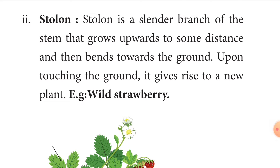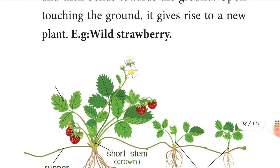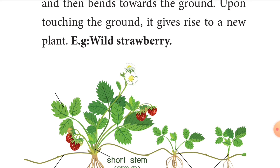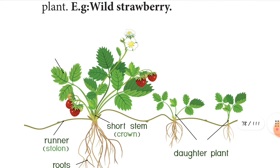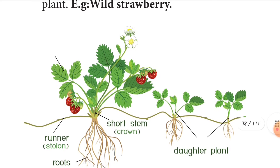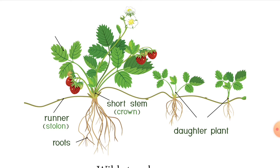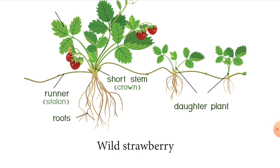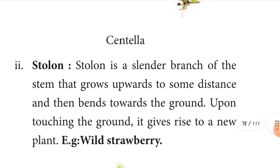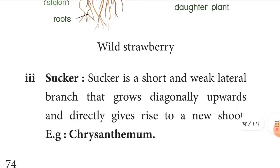Next is the stolon. This type of stem is a branch of the stem that grows upwards to some distance, then bends towards the ground and upon touching the ground gives rise to a new plant. The best example is strawberry. You can see the roots producing from one place to another with a short stem, flowers, fruits, and daughter plants.